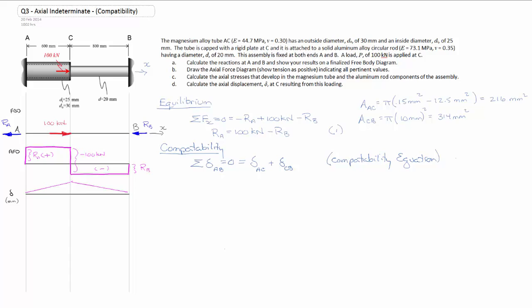The other equation, displacements equal to the axial load times the length over which it's applied, divided by the modulus of elasticity of the material and the cross-sectional area. This equation is going to get used to calculate the two individual displacements between A and C and C and B.